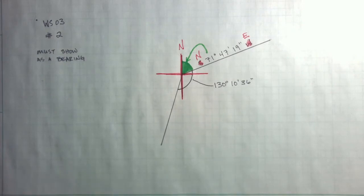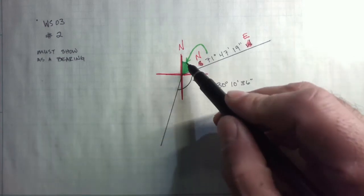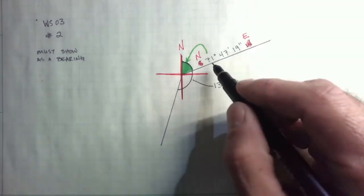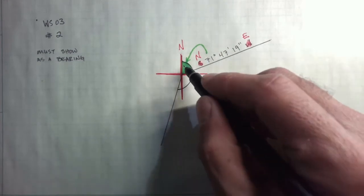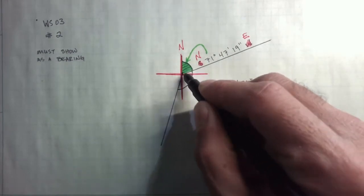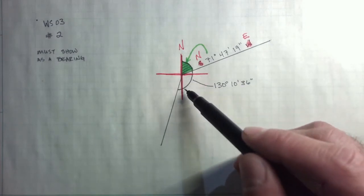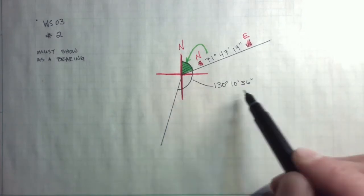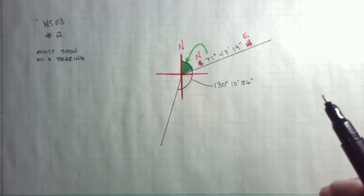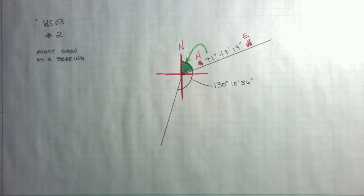So we now have this piece of the pie, 71 degrees, 47 minutes, 19 seconds. That's this portion. And we know the angle between the two lines is 130 degrees and some change. So I'm just going to start figuring out what pieces of the pie do I know, and what pieces do I need to solve for.